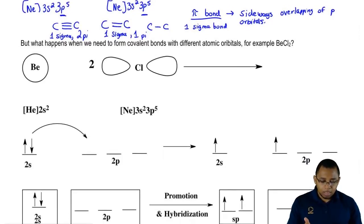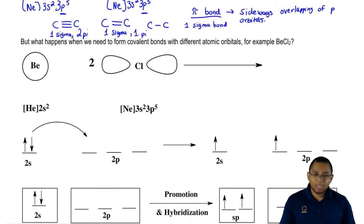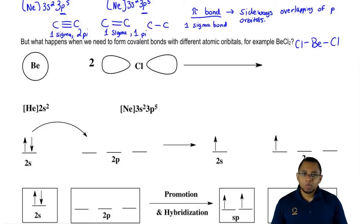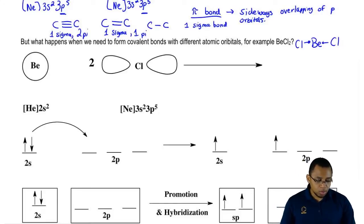What would happen though if we're trying to form a covalent bond with different atomic orbitals? For example, we have BeCl2. Now, BeCl2 looks like this. Beryllium is in group 2A, so it has two valence electrons. Chlorine is in group 7A, it has seven. Halogens when not in the center only make one bond.